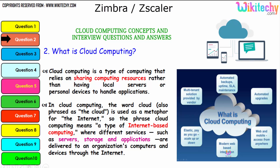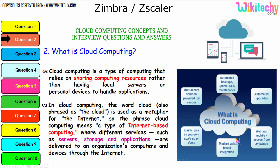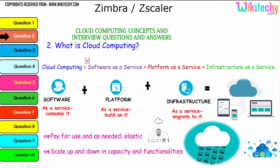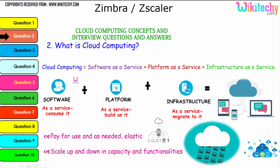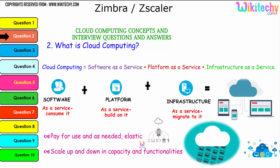Cloud computing has many features and advantages: multi-tenant solution, pay-as-you-go, modern web-based integration, web and mobile access, automated upgrades, and automated backups. Cloud computing is also defined as Software as a Service, Platform as a Service, and Infrastructure as a Service. The collaboration of software, platform, and infrastructure is referred to as cloud computing. A major advantage is pay-for-use: if you need minimal storage, pay for that; if you need bigger storage, pay for that. It is elastic — you can scale up and down in capacity and functionality.